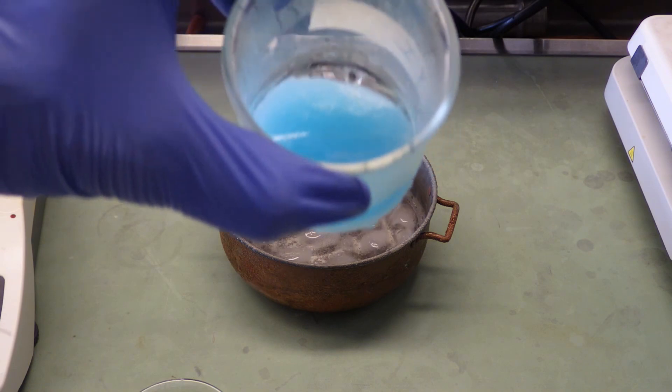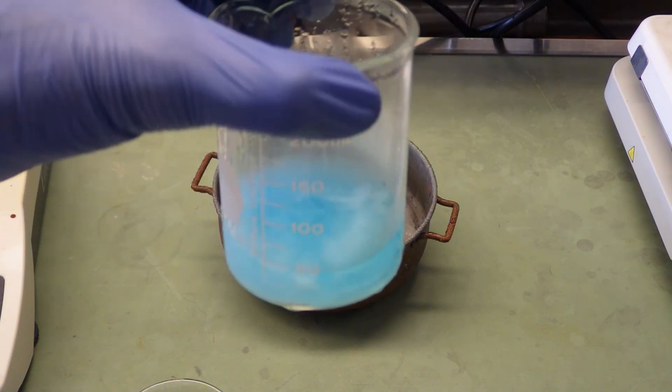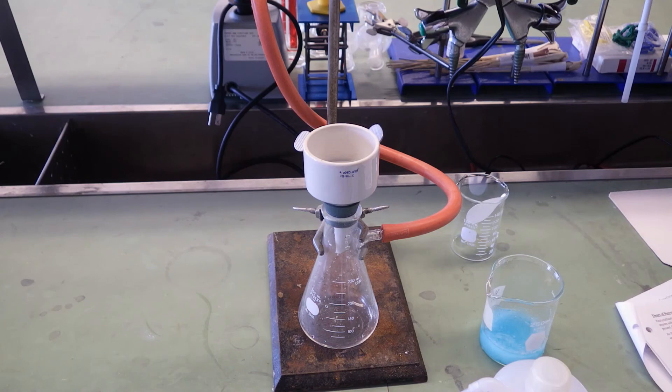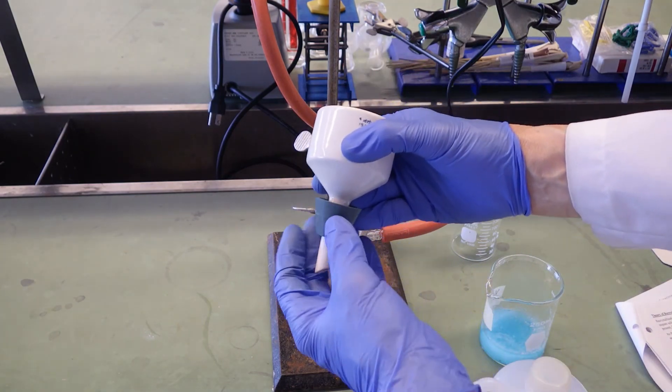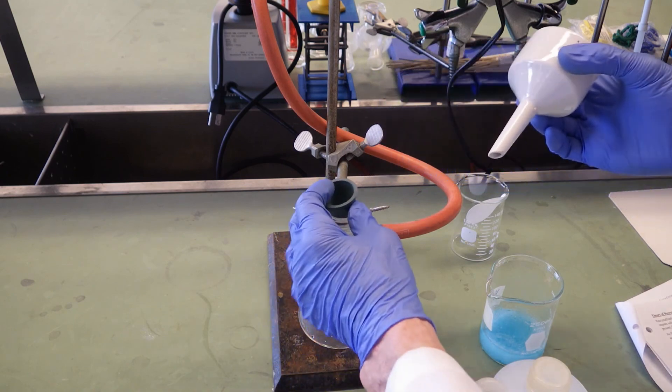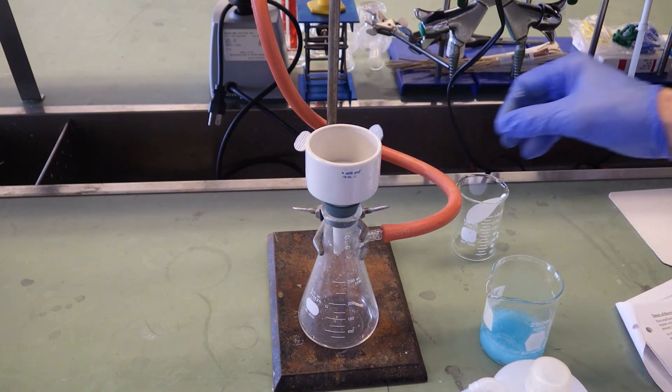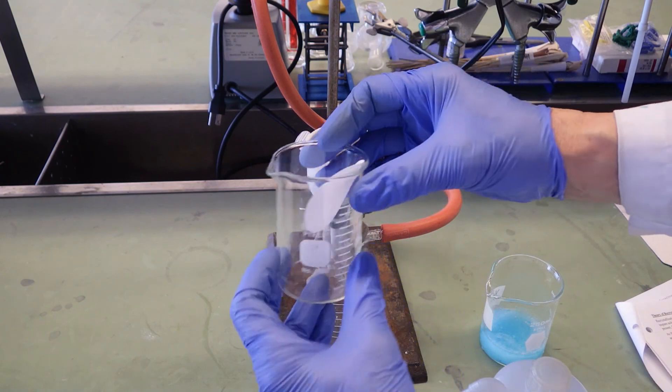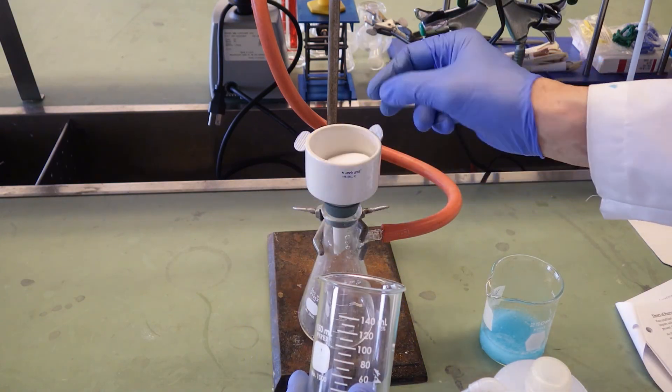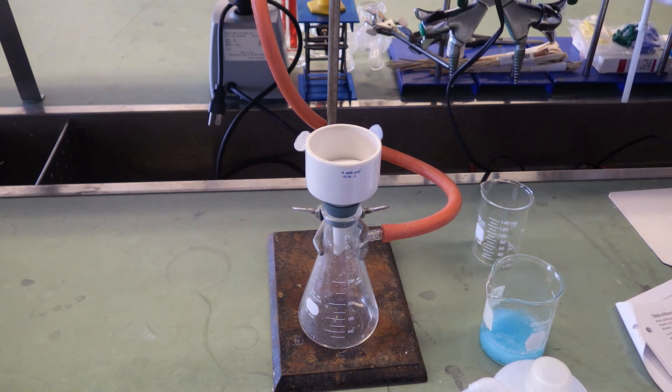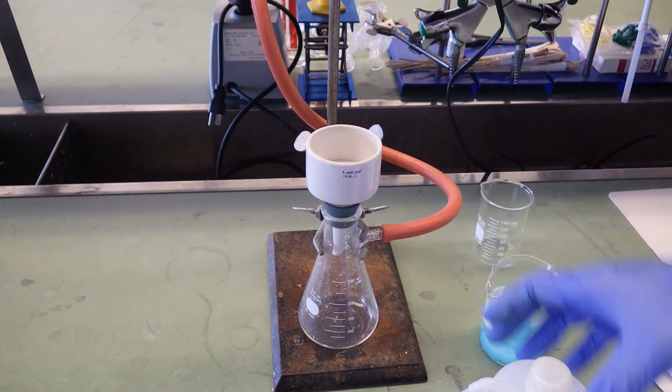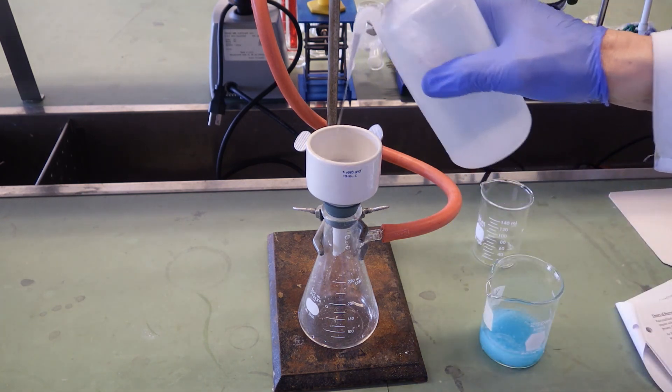We're going to separate this by vacuum filtration. Make sure that you clamp your vacuum Erlenmeyer to a retort stand, otherwise it will fall over. Got a green rubber gasket to make a seal between the Erlenmeyer and the Buchner. We'll take our pre-weighed filter paper, make sure it sits flat—not crinkled or puckered or solids will get under it. We'll seat that paper with a bit of water.